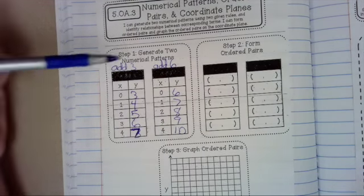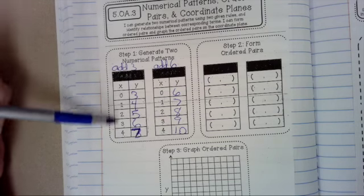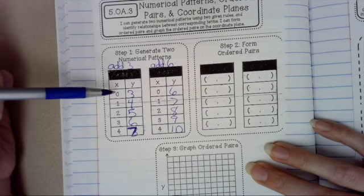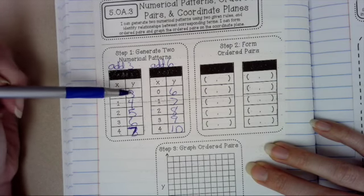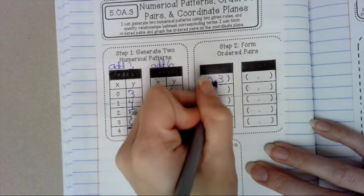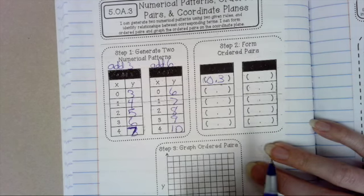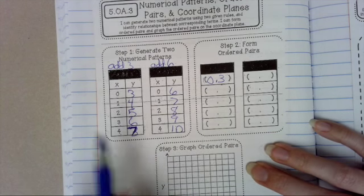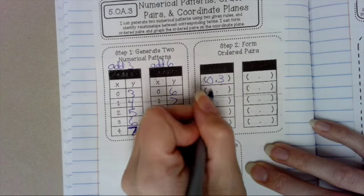Now we're going to take these X and Y coordinates, and we're going to write ordered pairs with them. So we're going to write X is 0, Y is 3. So we're going to write 0, 3. It has a comma between them and it always goes in parentheses. This chart gives you the comma and the parentheses, but it won't always. So our next ordered pair is 1, 4.